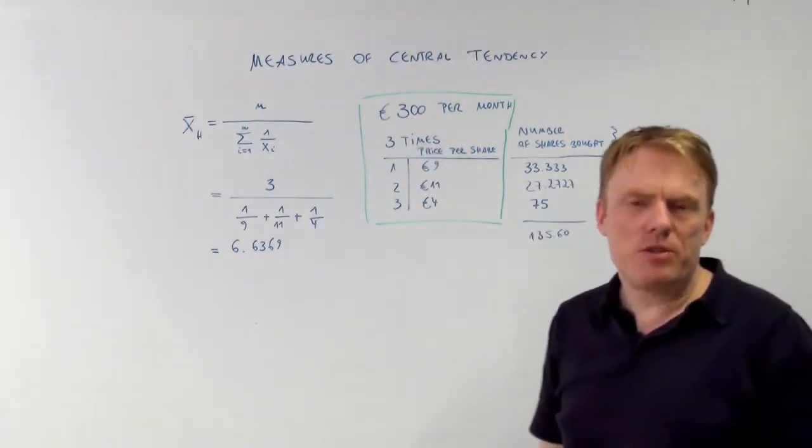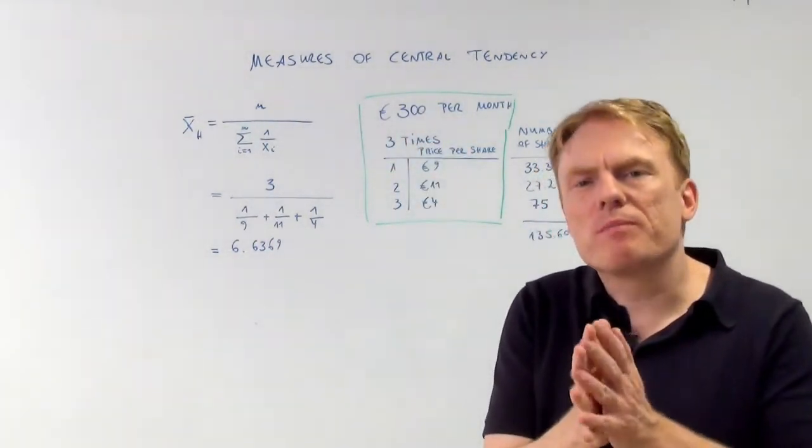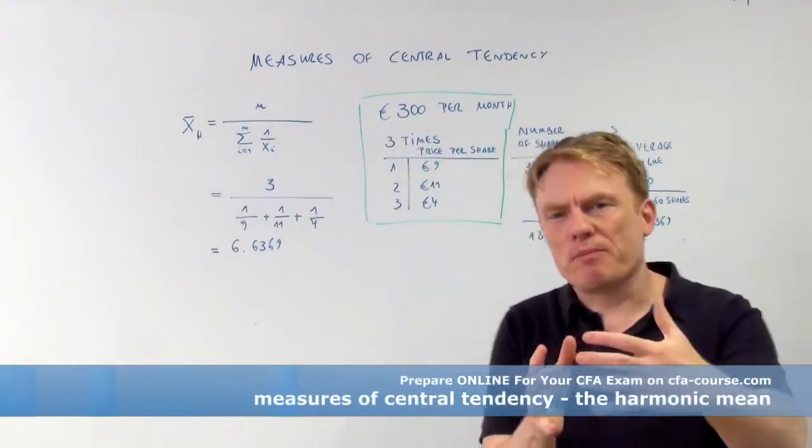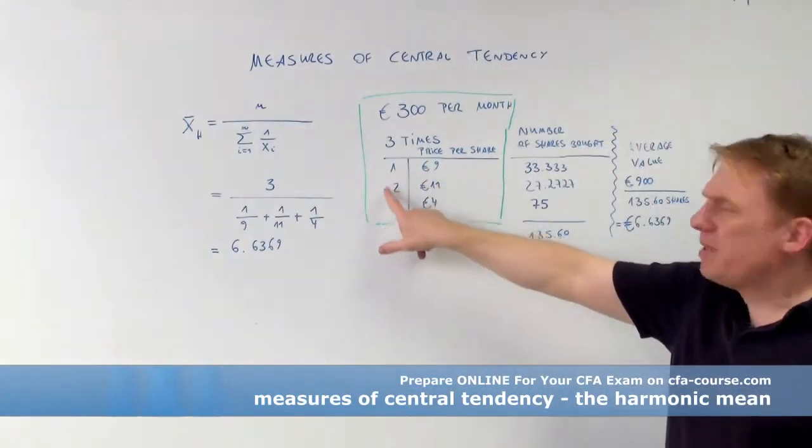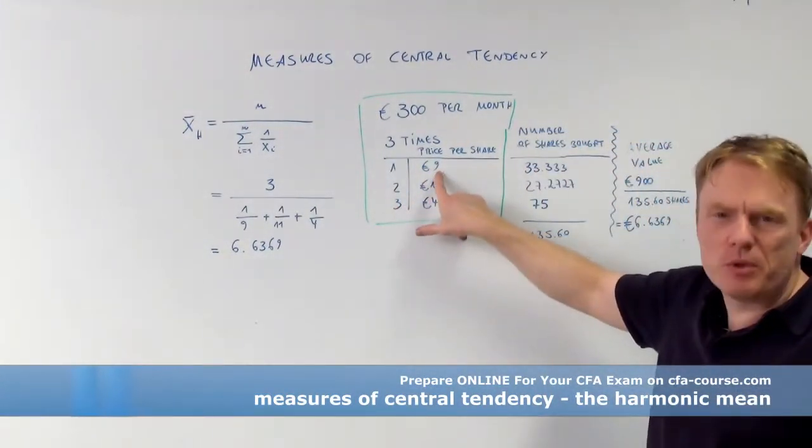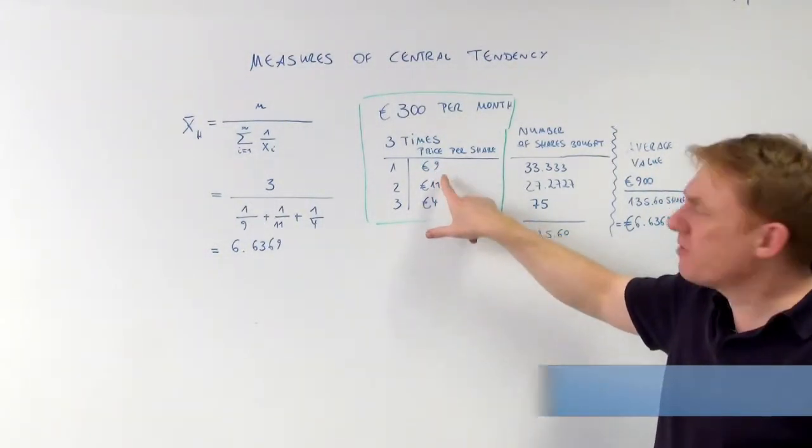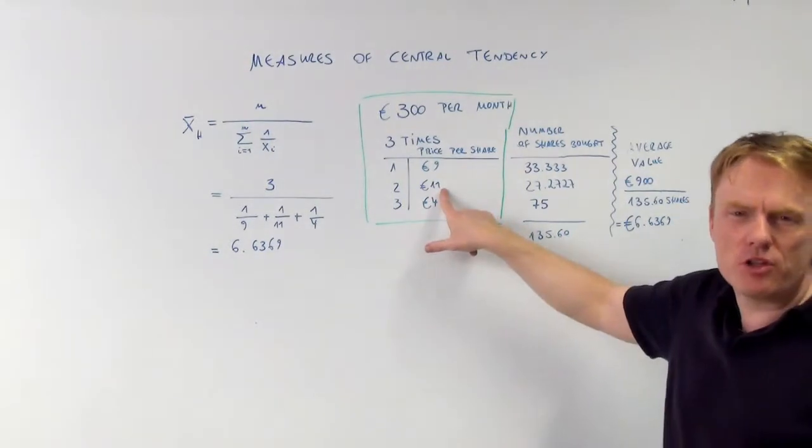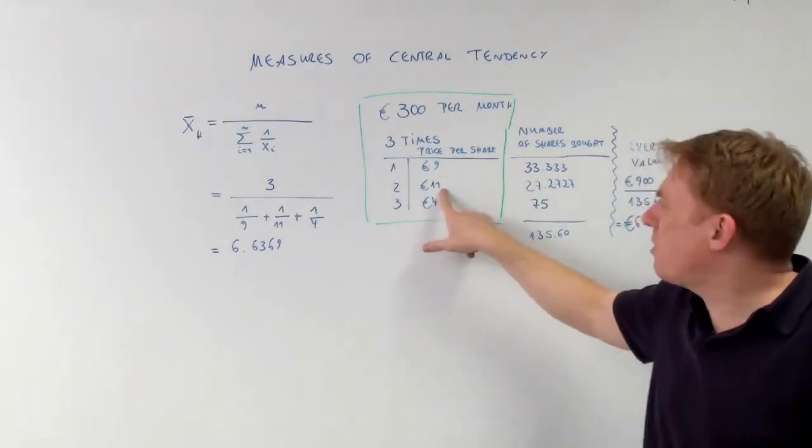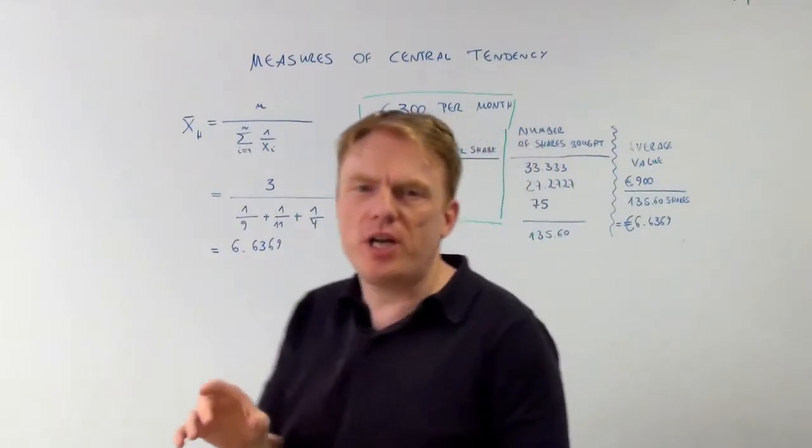You have 300 euros per month that you can buy shares with. You have three different months. In the first one you buy shares for 9 euros apiece. Then you buy shares for 11 euros per share, and then 4 euros per share.